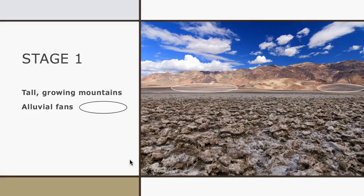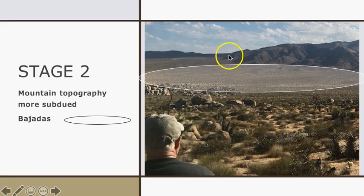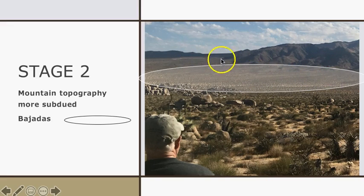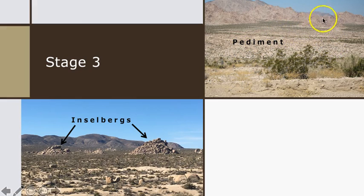Let's look at some real-life examples of each stage in the evolution of a desert landscape. Here we are in Death Valley, which is a Stage 1, maybe transitioning to Stage 2, with tall mountains that are actively growing and alluvial fans forming at their base. In Stage 2, the mountains are being eroded down and have a more subdued look, and the alluvial fans have grown and merged together to form large bajadas. In Stage 3, the mountains have been worn down and worn back to form pediments. The lighter colored surface is the bedrock worn down flat leading up to the old mountain front. This photograph shows examples of inselbergs, which are just the remnants of what used to be tall mountain peaks.